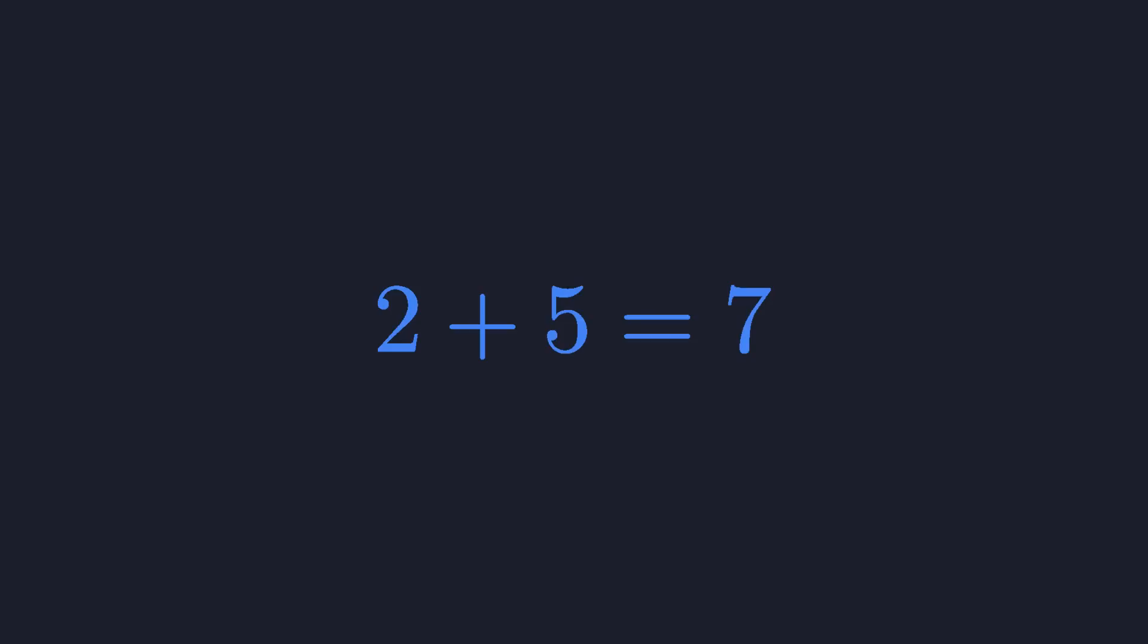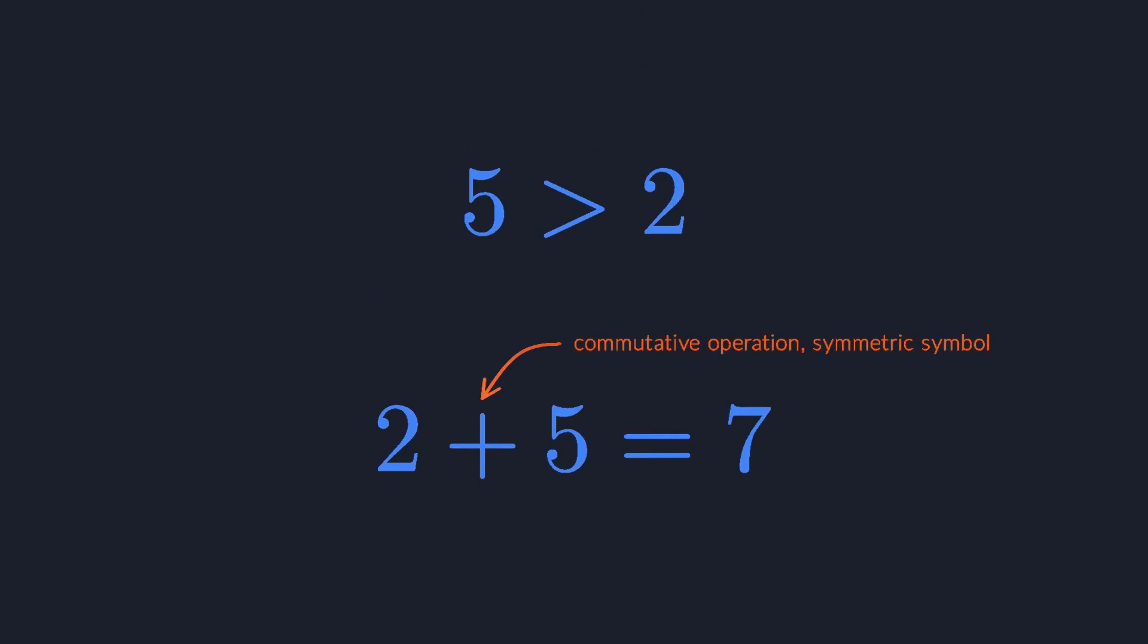So basically, as a sucker for good notation, I want commutative operations to have symmetric symbols, and I want anti-commutative operations to have asymmetric symbols.